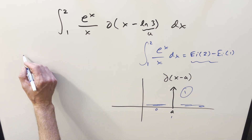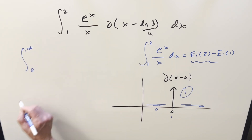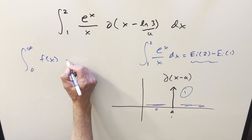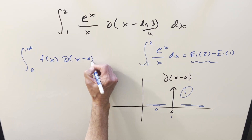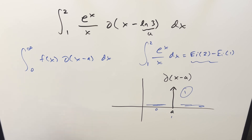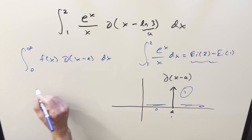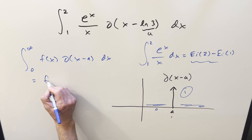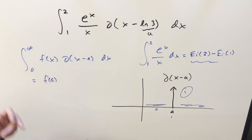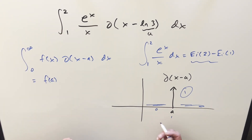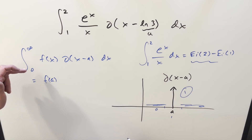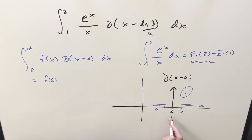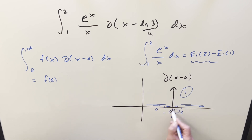What that means for an integral is: if we're integrating some function f(x) times our Dirac delta function from zero to infinity, all we do to find the value is evaluate the function at a — this thing is just f of a. Even though we integrate from zero to infinity, all the other stuff doesn't matter. In our integral we're going from 1 to 2, but it's the same idea: everything outside of the a value gets zeroed out and we still just evaluate at a.